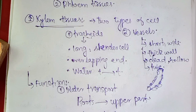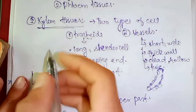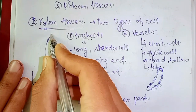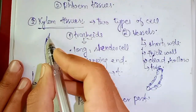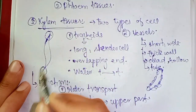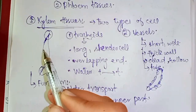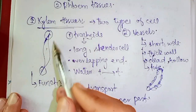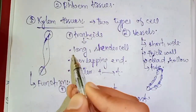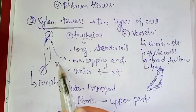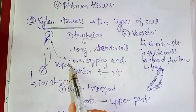Xylem cells are long, cylindrical with overlapping, tapering ends. The vessels are placed on the sides with tapering and overlapping ends. So from the overlapping ends, water moves from tracheids to tracheids upward through the plant.